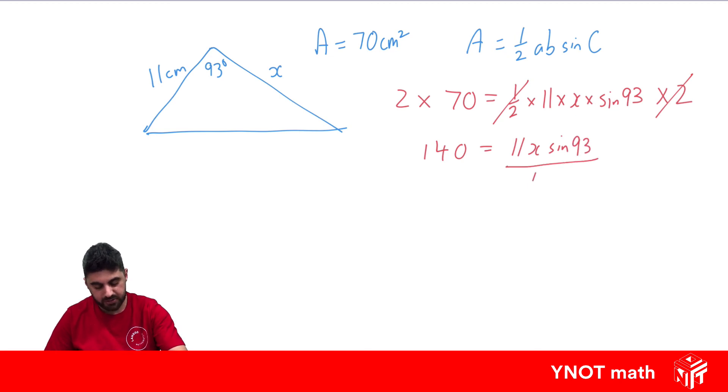We can now divide both sides by 11 sine 93 because we're trying to solve for x. The 11 is going to cancel out with the 11 and the sine 93 will cancel out with the sine 93 to leave us with x equals 140 over 11 sine 93. Put that in our calculator to get 12.7 centimeters to one decimal place.